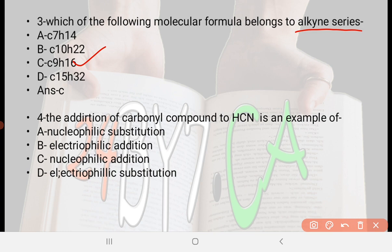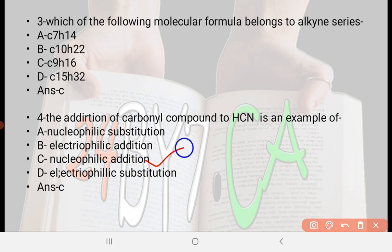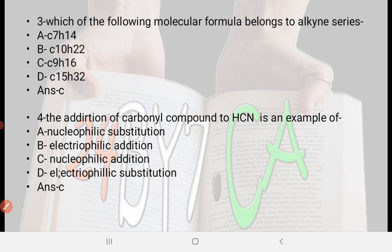Next: The addition of a carbonyl compound to HCN is an example of — option A: nucleophilic substitution reaction, option B: electrophilic reaction, option C: nucleophilic addition reaction, option D: electrophilic substitution reaction. The right answer is nucleophilic addition reaction. The addition of a carbonyl compound to HCN is an example of nucleophilic addition reaction.